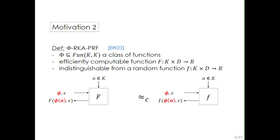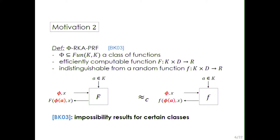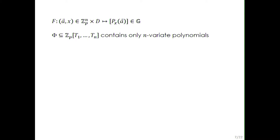The more interesting motivation is for related-key security. Related-key security is an extension of the standard security model where the adversary is more powerful: they can not only query the pseudorandom function with adaptive inputs, but also modify the key by applying functions to it. This was formalized by Bellare and Kohno in 2003, who also proved that it is impossible to build a PRF secure against an adversary that can apply any function to the key. The goal is to build constructions secure for the largest possible classes.